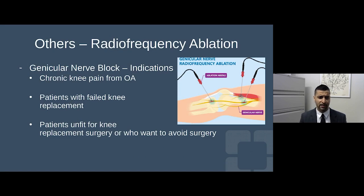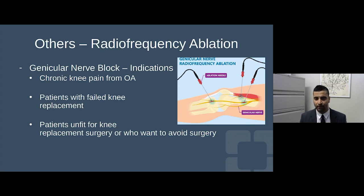With regard to opioids, tramadol, and radiofrequency ablation procedures, we often defer to our pain management colleagues. Radiofrequency ablation — what we call the genicular nerve block — is where pain management colleagues essentially ablate the nerve contributing to osteoarthritis pain, particularly around the knee. This is really an option for patients who are unfit for joint replacement or who have failed a joint replacement and still have symptomatic osteoarthritis pain.